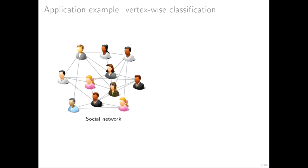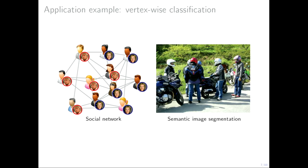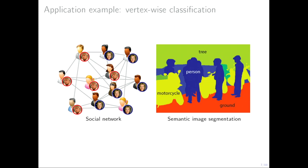A different application is vertex-wise or edge-wise classification, where we have a network — say, a social network of users, or in your field, a network of patients — and we want to make a prediction about each individual. For example, in computational social science we might predict election results, or in biomedical imaging, automatic diagnosis — predicting whether a person suffers from some disease. The analogous problem in computer vision would be semantic segmentation, where we want to label each pixel in an image.